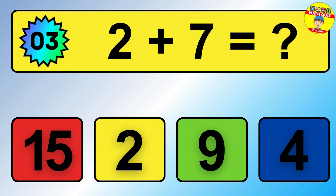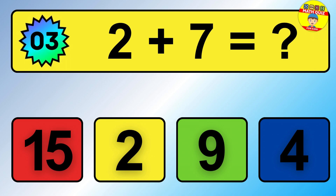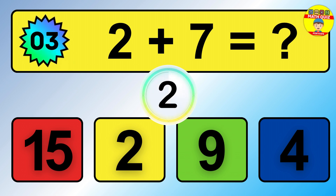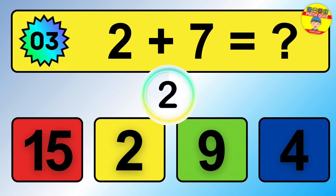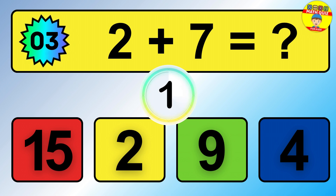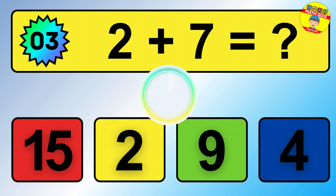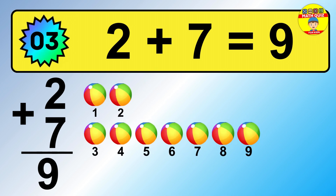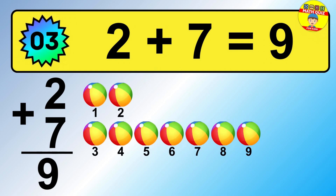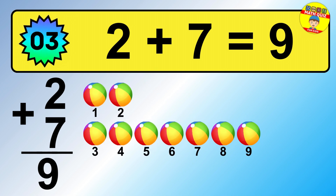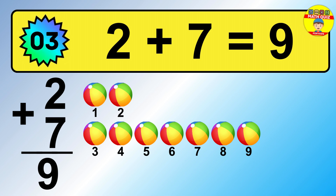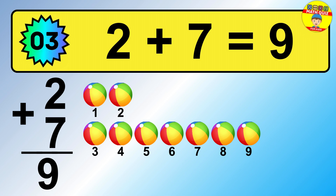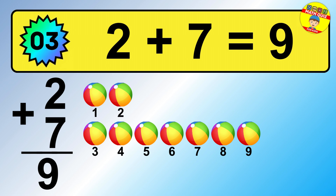Question 3. 2 plus 7 equals what? So the answer is 2 plus 7 is 9. Let's count it: 1, 2, 3, 4, 5, 6, 7, 8, 9.